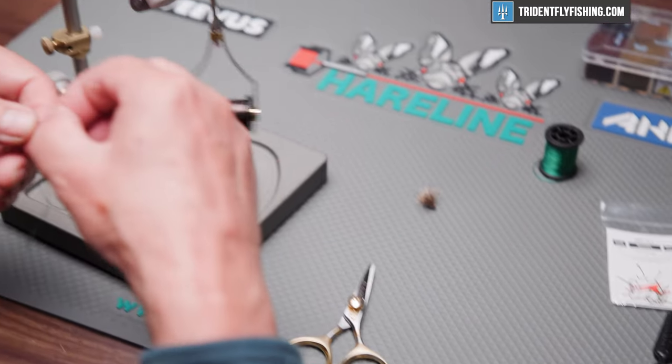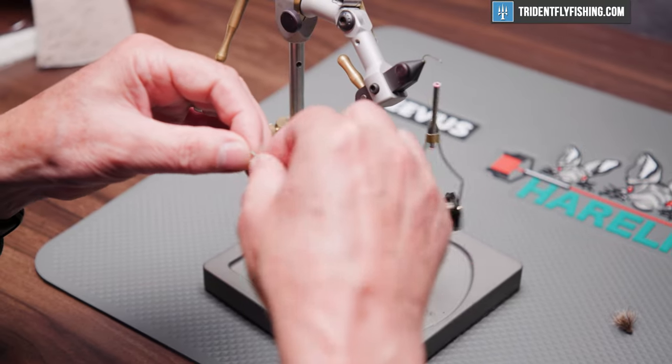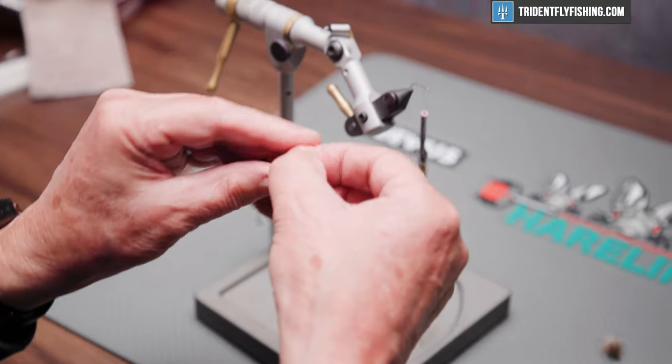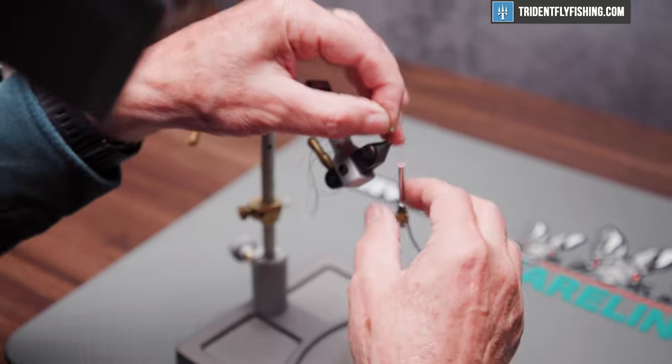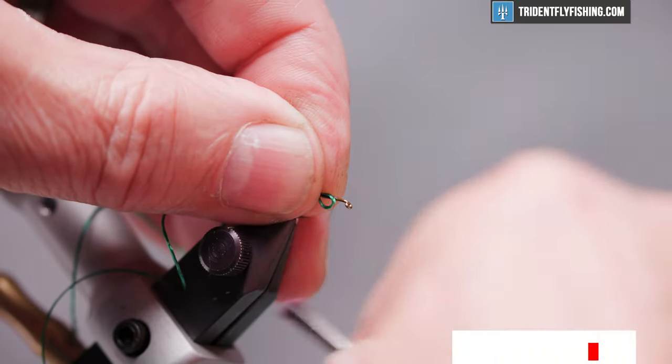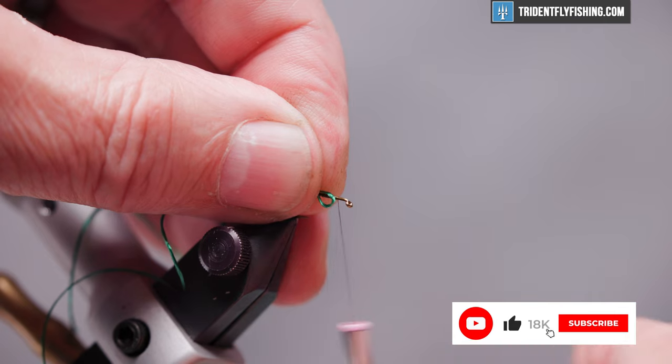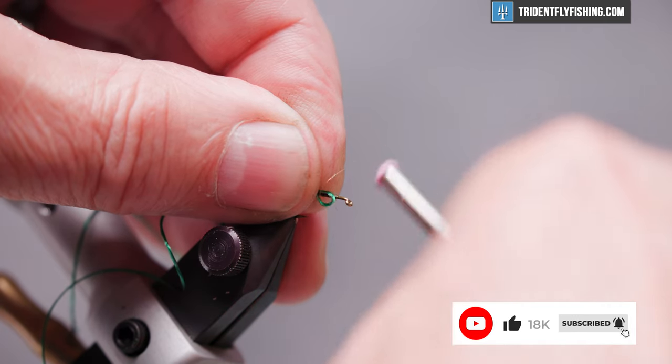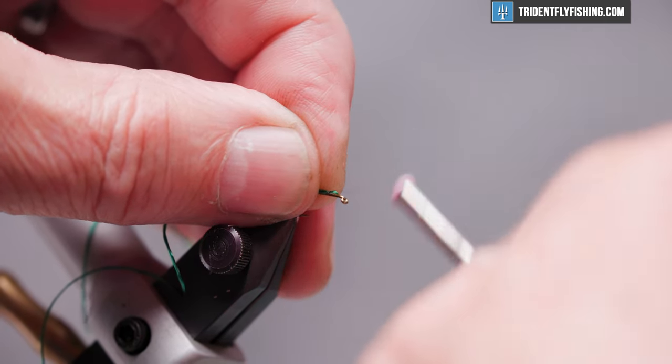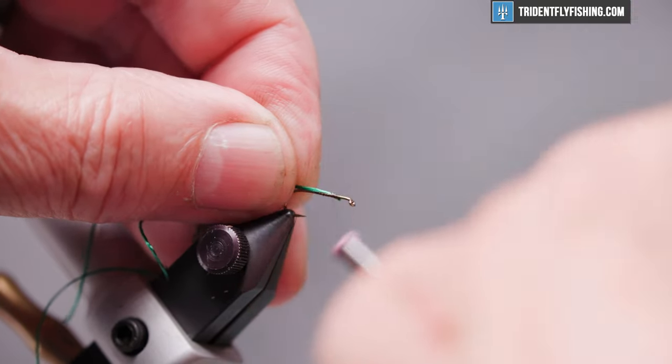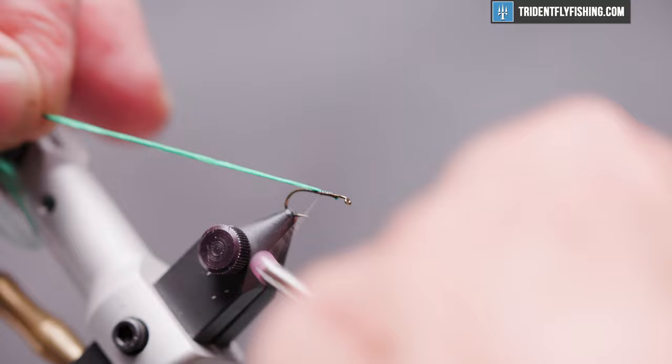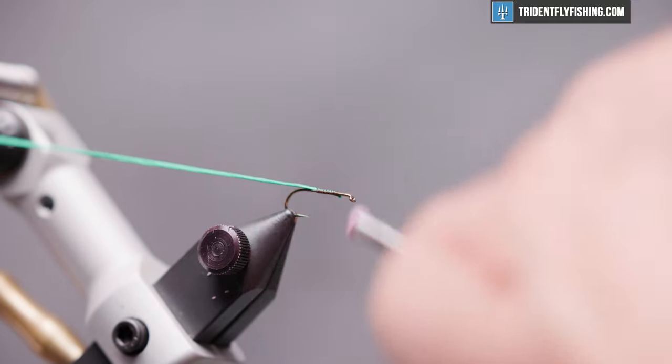And I also believe the male fly is a little bit smaller so maybe you want to jump this down to a size 16 hook for the male. So we're going to double our thread up and tie this in right on top of the hook. Run this all the way back to where the barb would be or at the start of the bend of the hook.